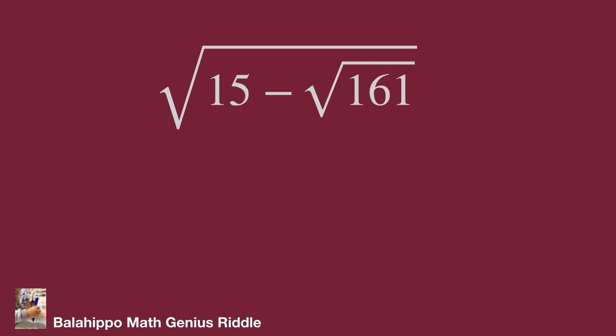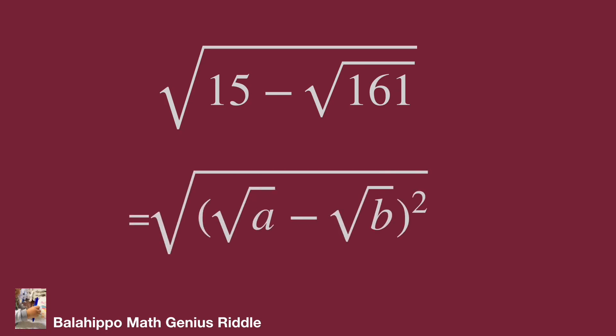As our understanding, the item inside the square root should equal to certain perfect squares — then we can remove the square root and get our answer. For easy explanation, we can say the question equals the square root of (√a minus √b) squared.